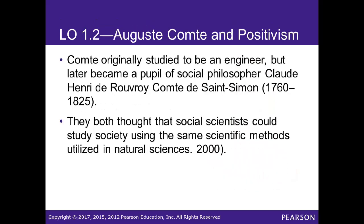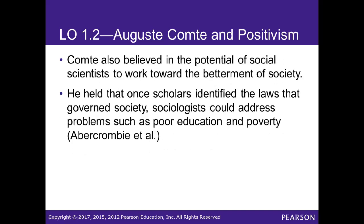Comte originally studied to be an engineer but later became a pupil of social philosopher Claude Henri de Saint-Simon. Both believed that society could be studied using the same scientific methods as the natural sciences. Comte believed in the potential of social scientists to work toward the betterment of society through social reform. He held that once scholars identified the laws governing societies, sociologists could address problems such as poor education and poverty — all back in the early 1800s.